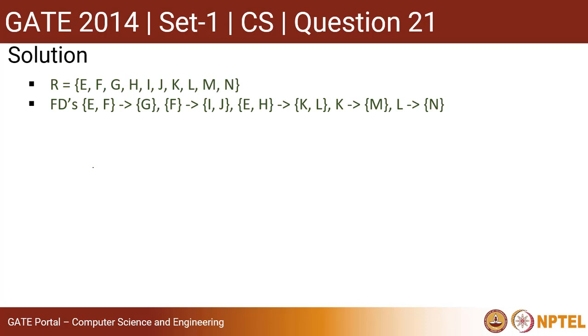We have the R relation and the dependencies over here. Let us check the closure for EF. If you have EF, by default this closure will include EF. Now EF determines G, so I can add G over here. F determines IJ.